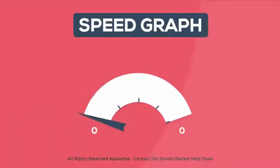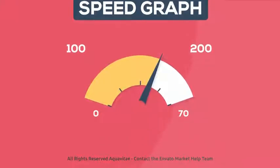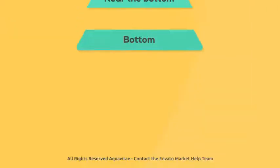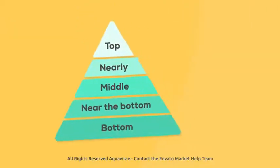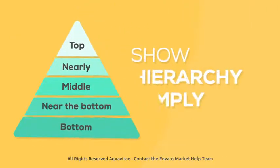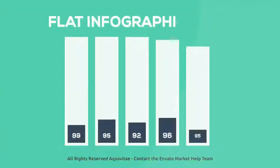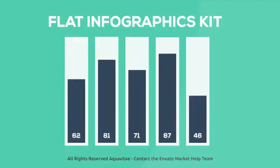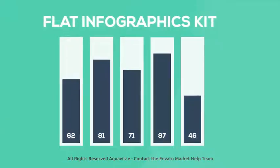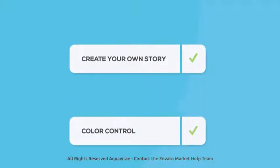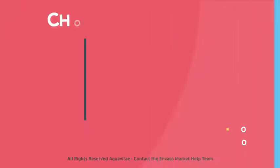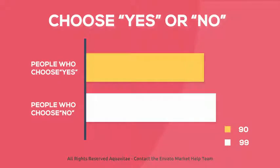Look at this speed graph go — 0 to 70 in a flash. There are pyramid structures for illustrating hierarchical data, simple and easy. Rising figure charts to highlight those rising profits. Fold down panels to display top performing notifications, and of course clear and attractive bowling charts.